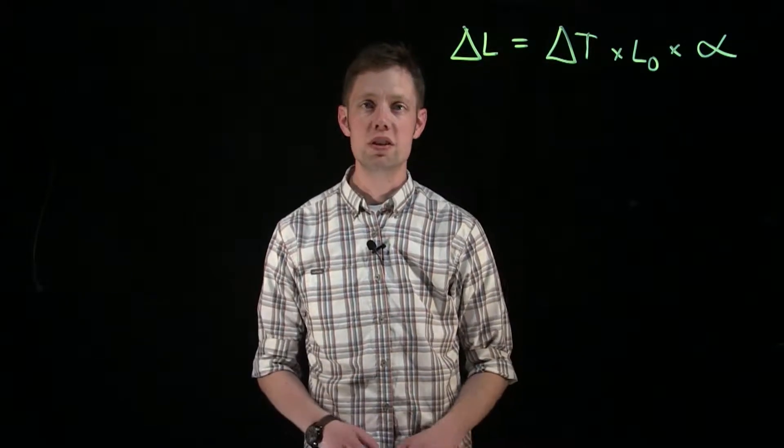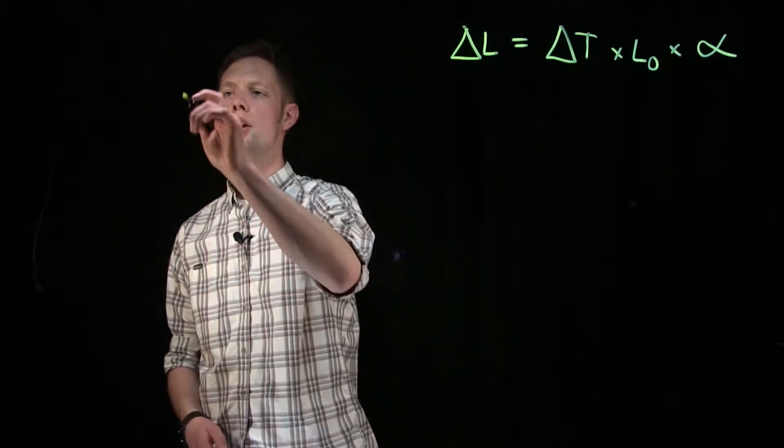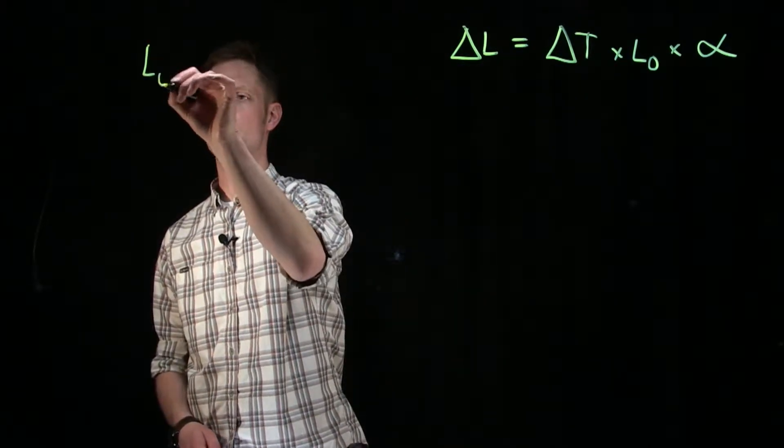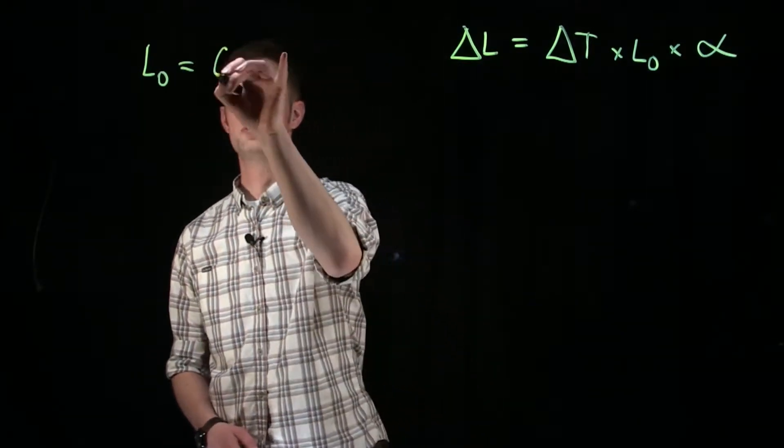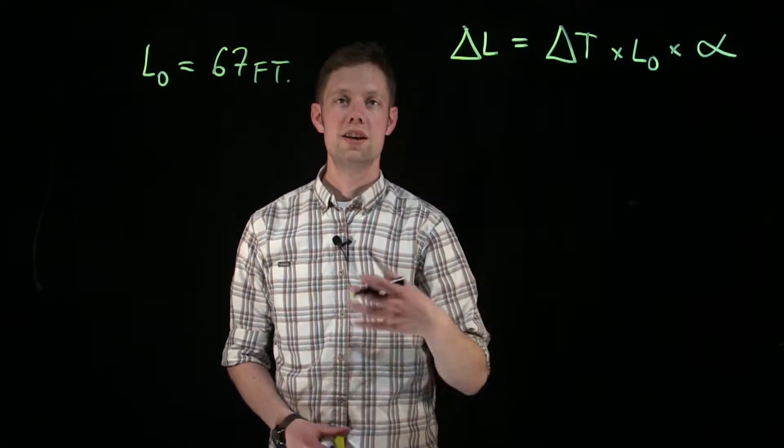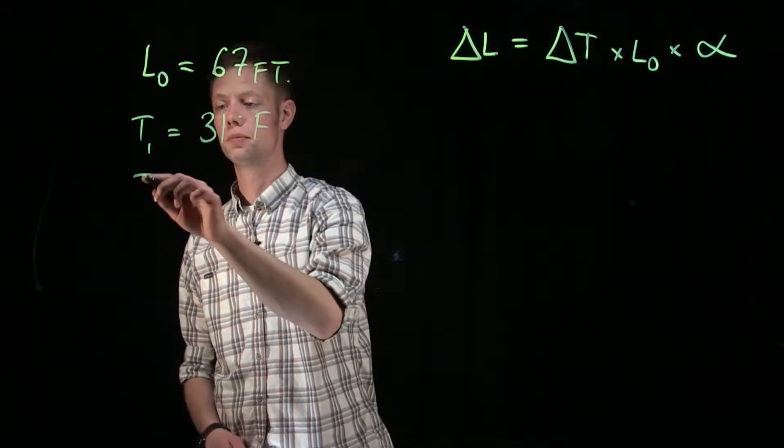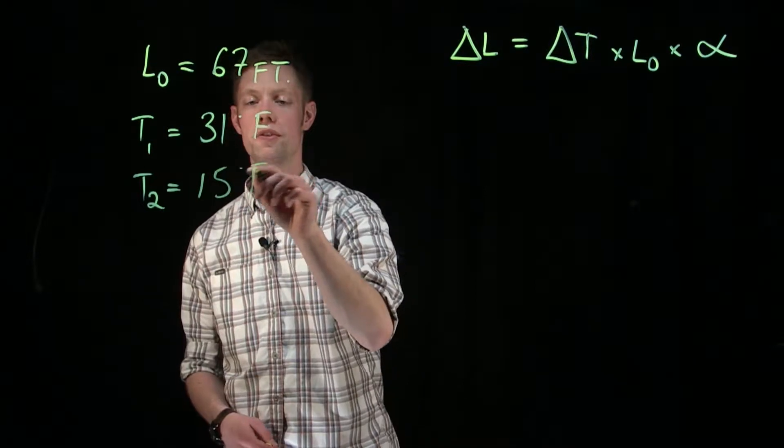So the first thing we need to do is record the values that we've been given in the problem. The length of copper we're going to call L₀ for original length, 67 feet. The initial temperature was 31 degrees Fahrenheit and the second temperature was 15 degrees Fahrenheit.